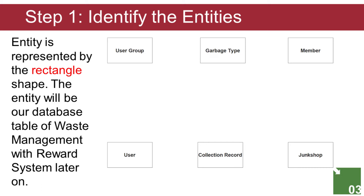In the Waste Management with Reward System, we have the following entities. According to our model, the system consists of six components or entities. The tables that make up our database schema will be designed and developed as we construct the Waste Management with Reward System. We will draw a rectangle with the system's components within to explain how the entire system works.